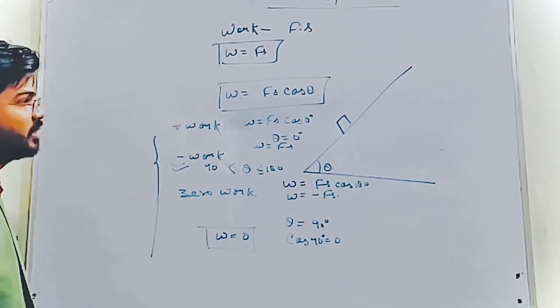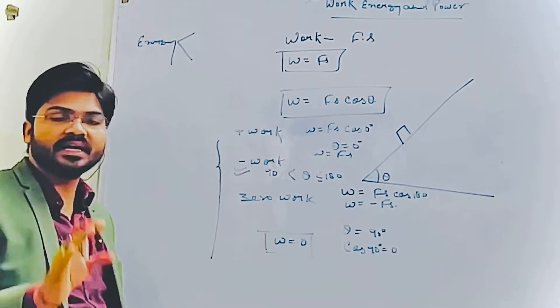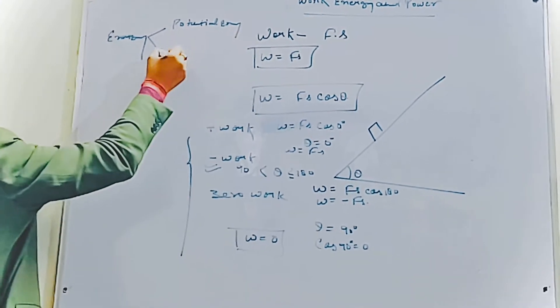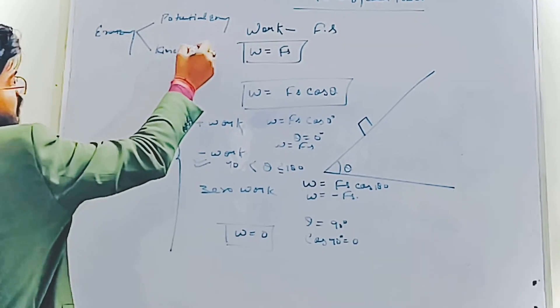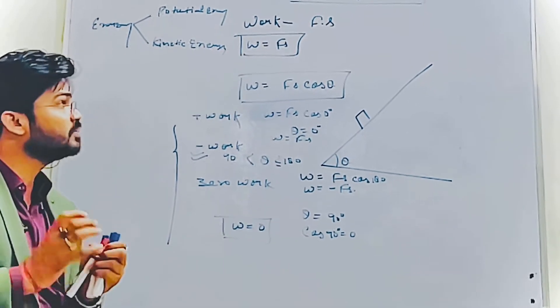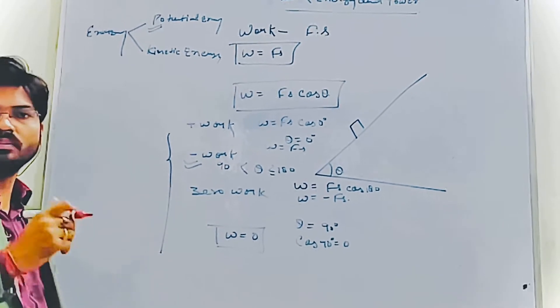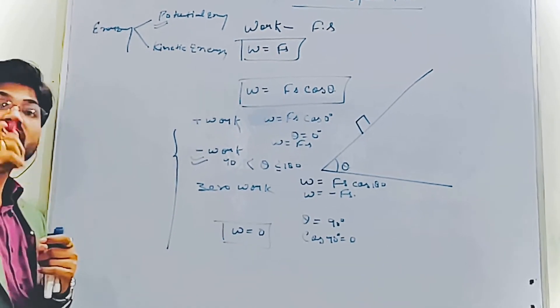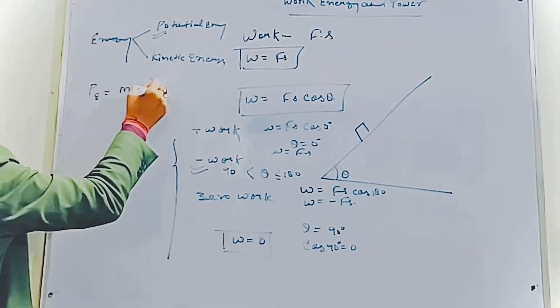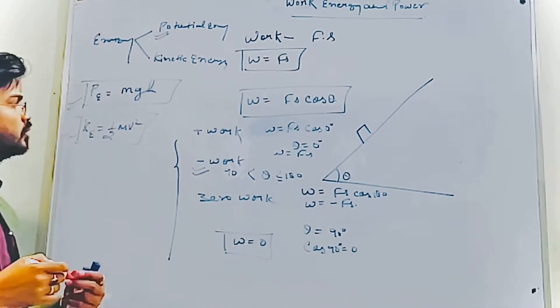Now, next topic is energy. So there are two types of energy. What is energy? The capacity to do work is called energy. There is potential energy and kinetic energy. When there's no motion, we have potential energy. When there's motion, we have kinetic energy. Energy possessed by virtue of motion is called kinetic energy. So potential energy PE equals mgh and kinetic energy KE equals half mv squared. Now we need to derive these equations.